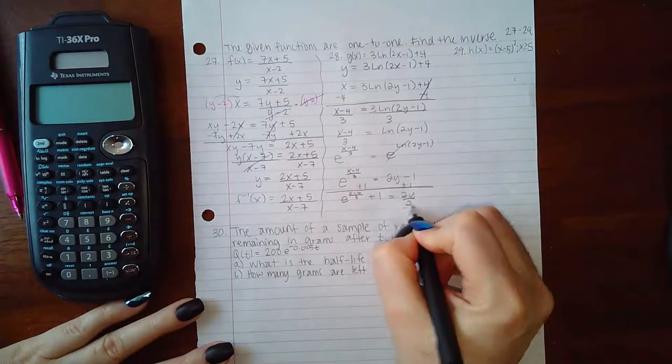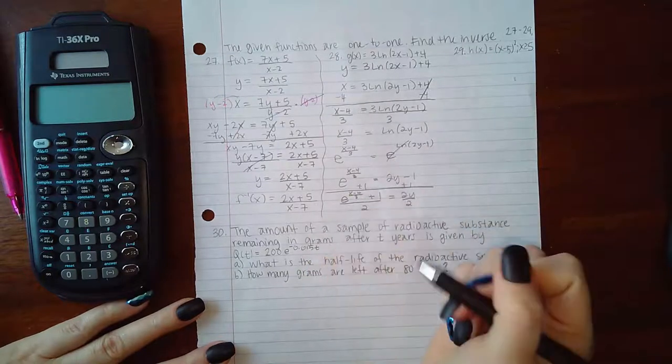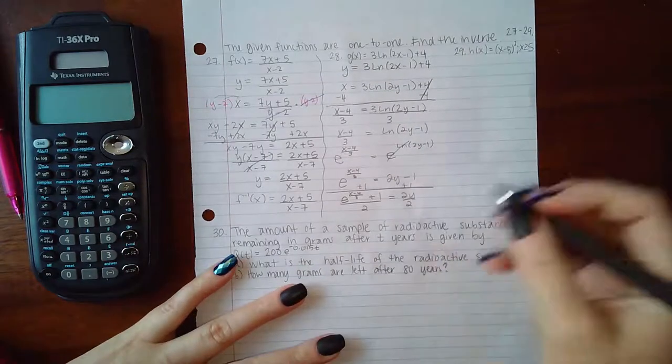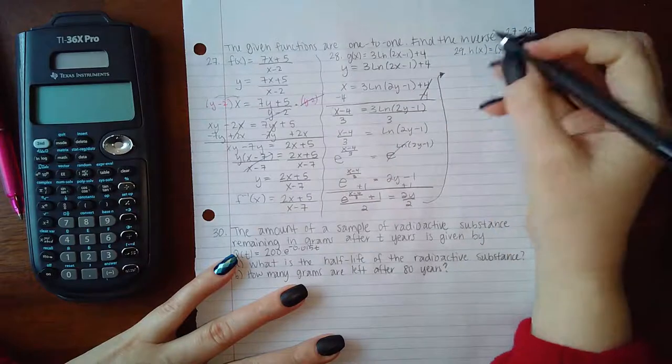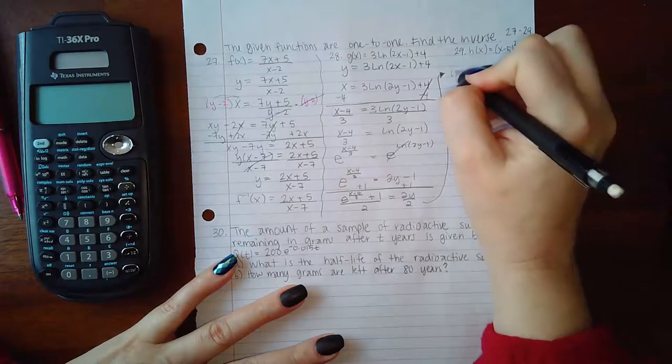Divide by 2 on both sides and I end up with this expression. I am going to have to come over here and bleed into my space for number 29, so I'm going to have y equals [e to the (x minus 4) over 3 plus 1] divided by 2.